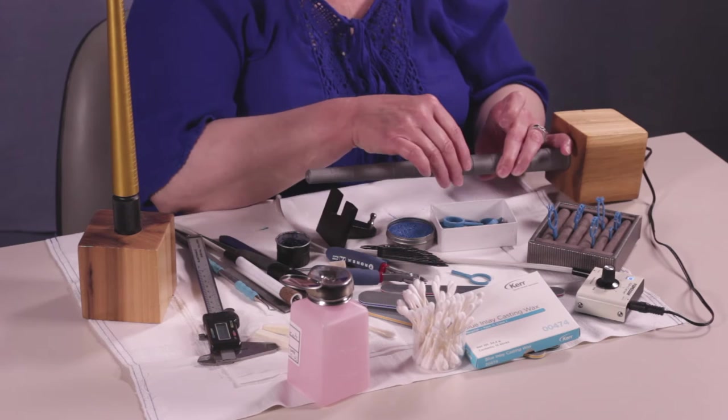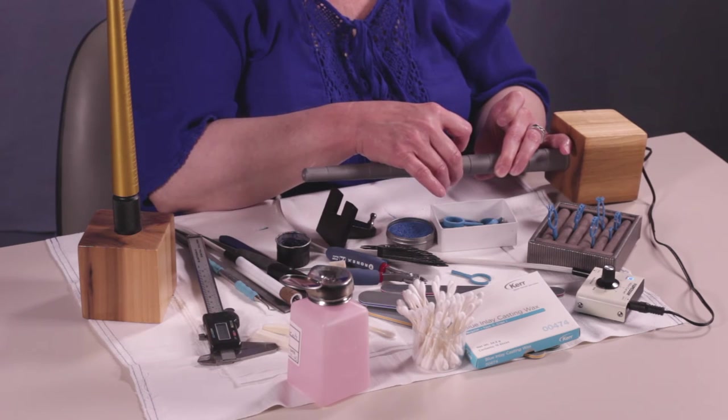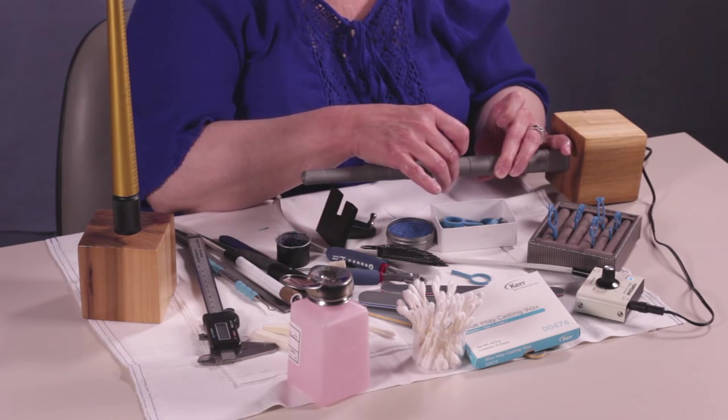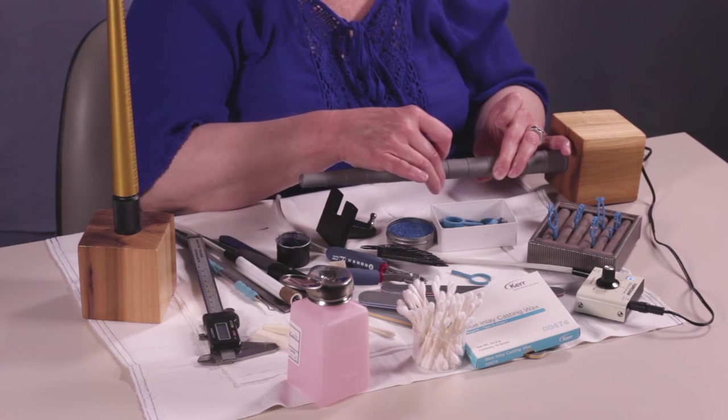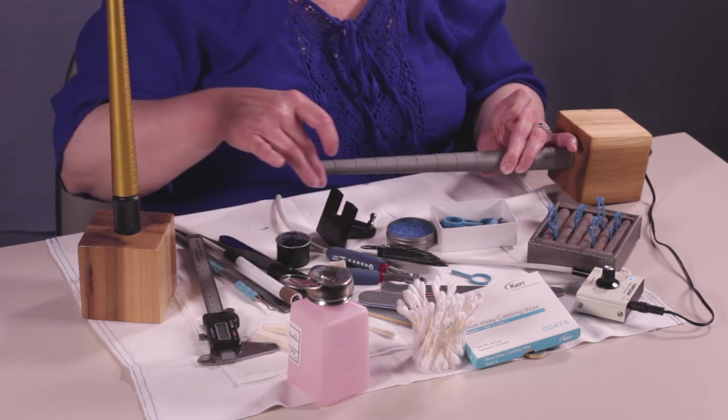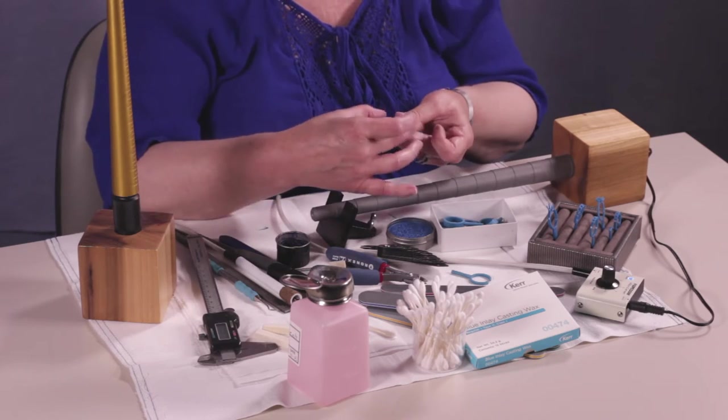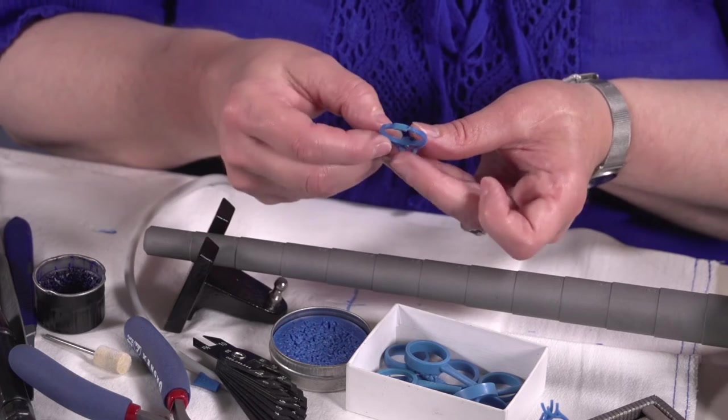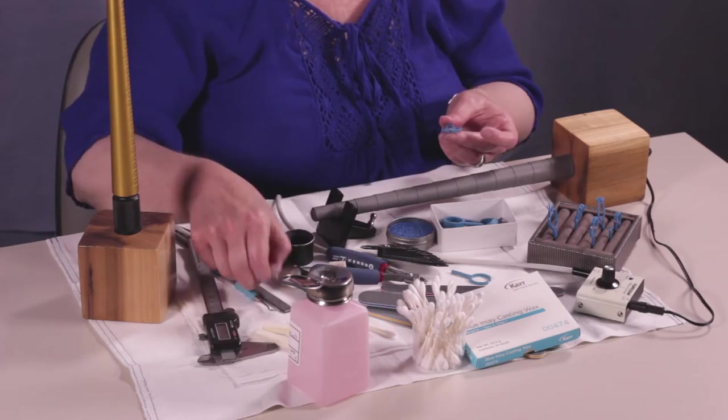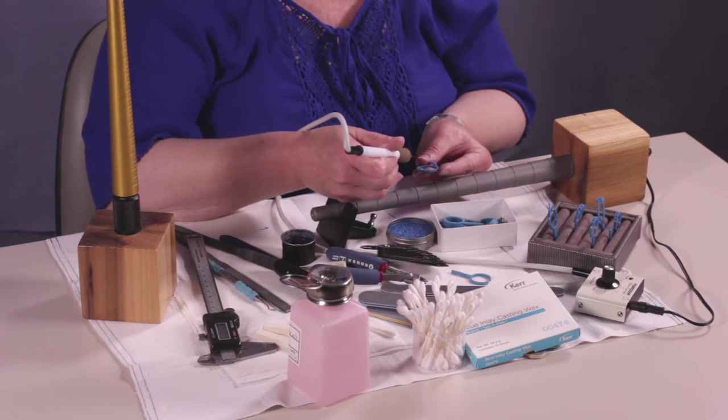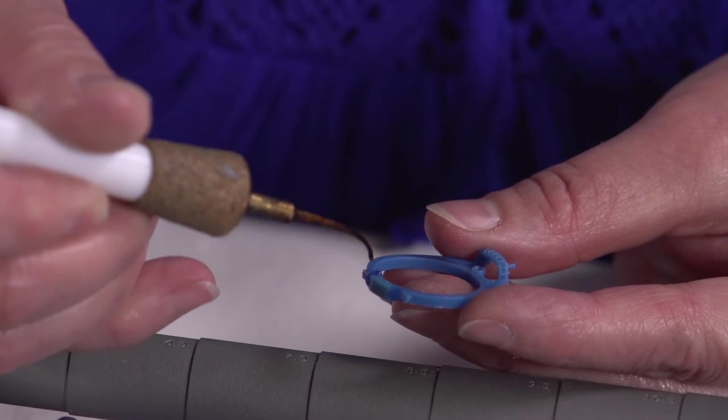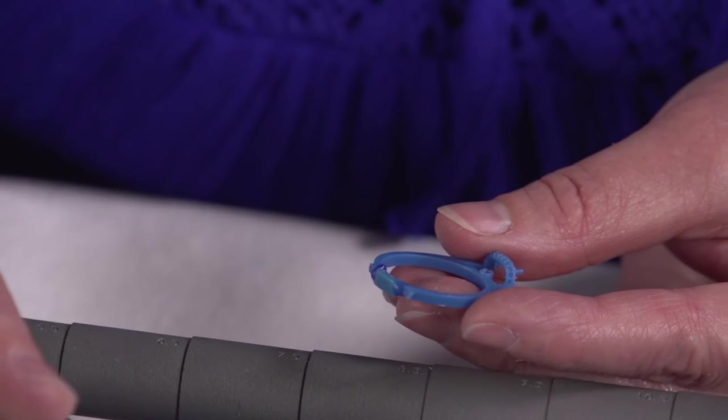Looks pretty good now. Be careful that you don't break it when you're taking it off. You just kind of work it off slow. Now we have a size that's a 9.5. I'm going to fill in anything that I didn't get while it was on the mandrel. Work in these little edges.